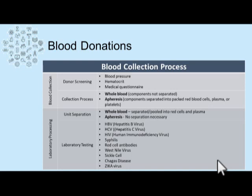Once collection is complete, the specimen is taken to the lab for separation. If it's whole blood, it needs to be separated and pooled into the respective red cell, plasma, or platelet constituents. If it was an apheresis donation, no further separation is necessary. Once the separation process is complete, laboratory testing can begin to test for communicable diseases such as hepatitis B, hepatitis C, HIV, syphilis, additional red cell antibodies or antigens, West Nile virus, sickle cell trait or disease, Chagas disease, and most recently the American Association of Blood Banks required testing for Zika virus.